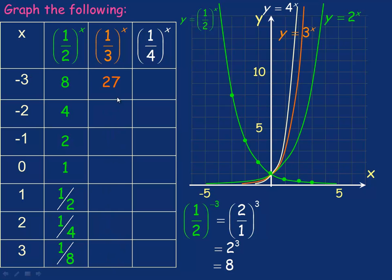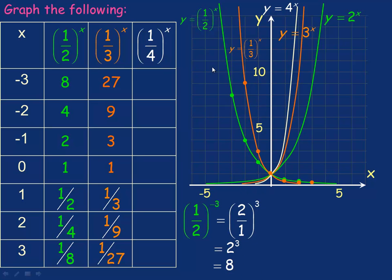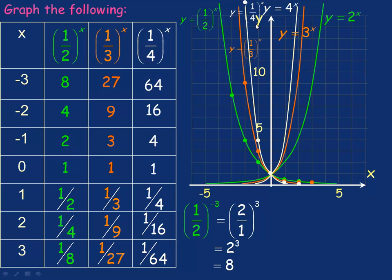Very similarly, you can graph the rest of these. Plotting the points for y equals a third to the power of x and drawing a smooth curve gives that graph. And then a quarter to the x, plotting those y values and drawing a smooth curve gives that graph. Notice that a half to the x and 2 to the x are actually reflections of each other in the y-axis. Same for y equals 3 to the x and y equals one third to the x, and for 4 to the x and a quarter to the x.